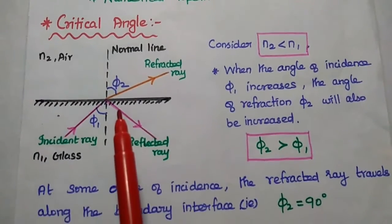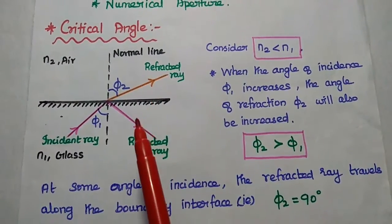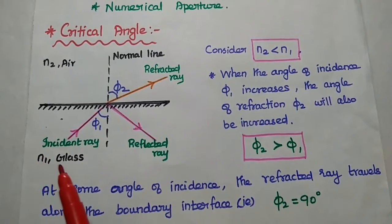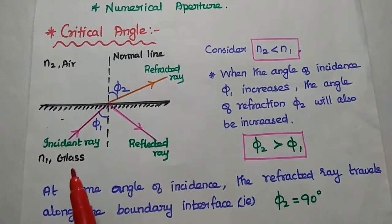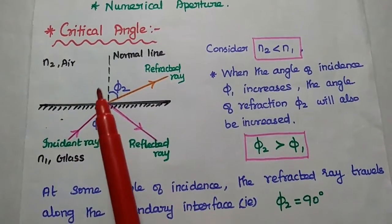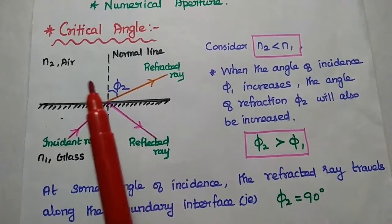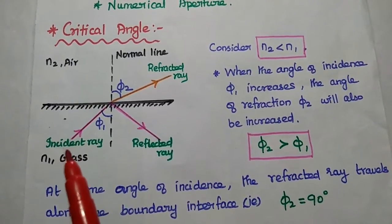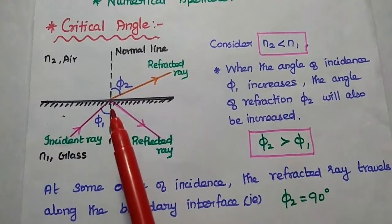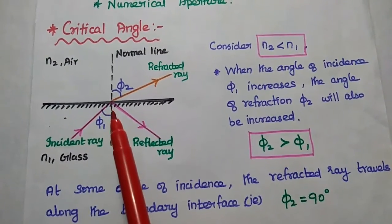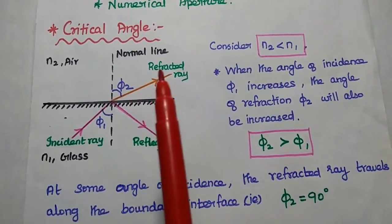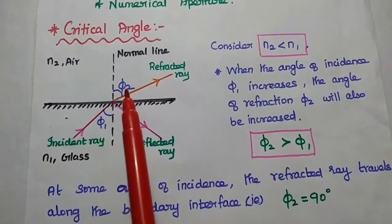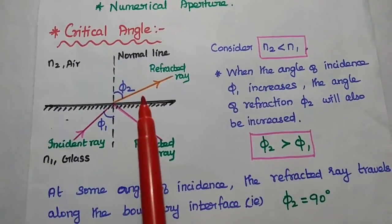The first one is critical angle. Here we consider two different media with different refractive indexes N1 and N2. N1 is the refractive index of the more dense medium, that is glass medium. N2 is the refractive index of the less dense medium, that is air. So N2 is always less than N1. When the light ray is incident at the boundary interface between two media, part of the signal is reflected and the remaining part is refracted with the angle phi2. When the angle of incidence phi1 increases, then the angle of refraction will also be increased.